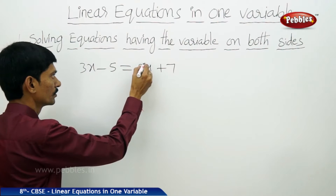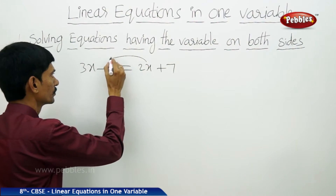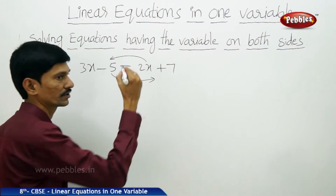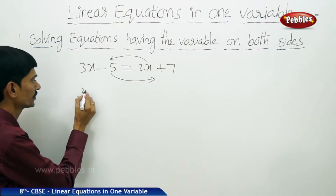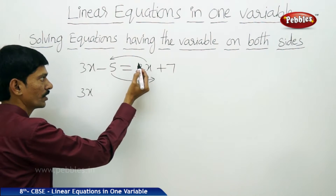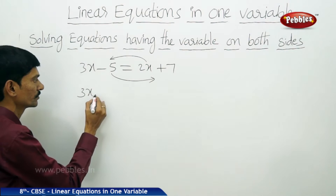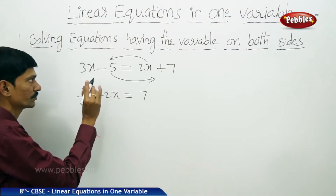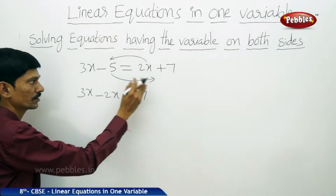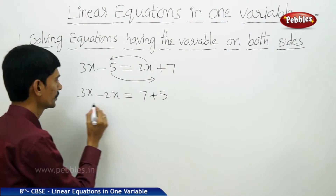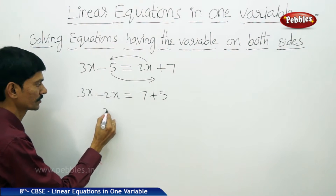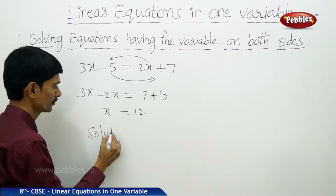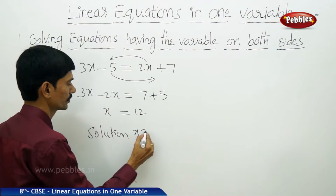So the variable term 2x should come to LHS and minus 5 should be transposed to RHS. 3x stays the same. When you transpose 2x from RHS to LHS it becomes minus 2x. When you transpose minus 5 from LHS to RHS it becomes plus 5. So 3x minus 2x gives x, and 7 plus 5 is 12. The solution is x equals to 12.